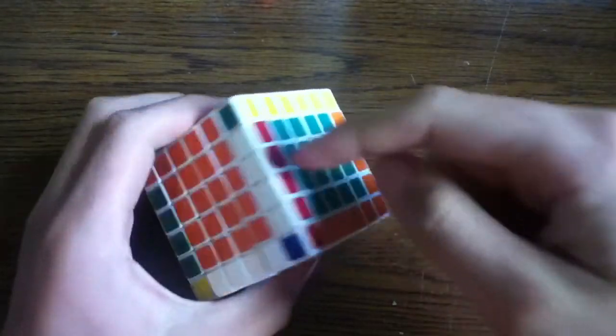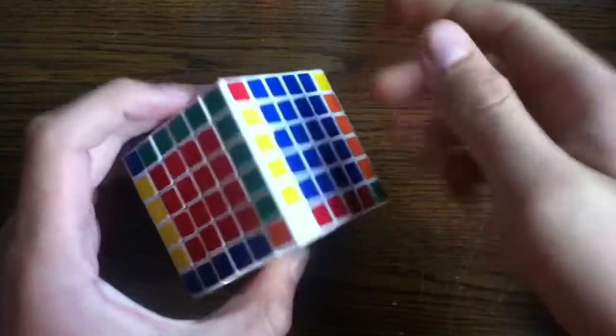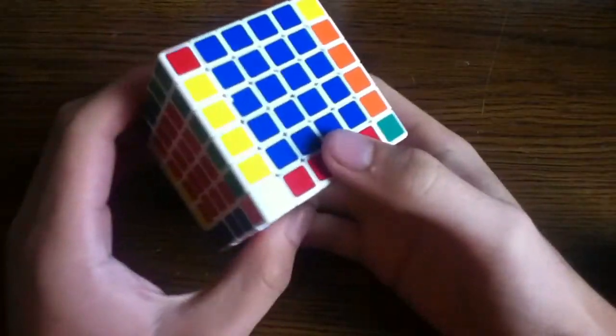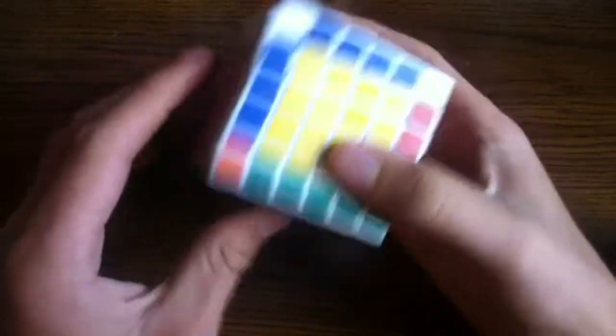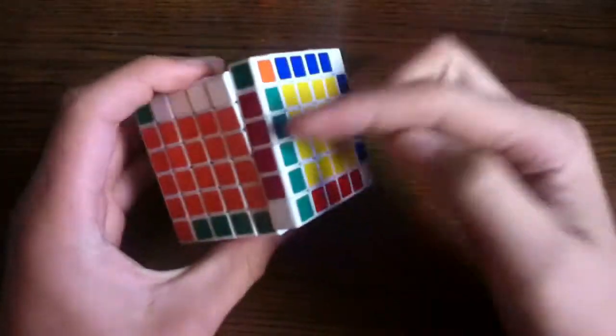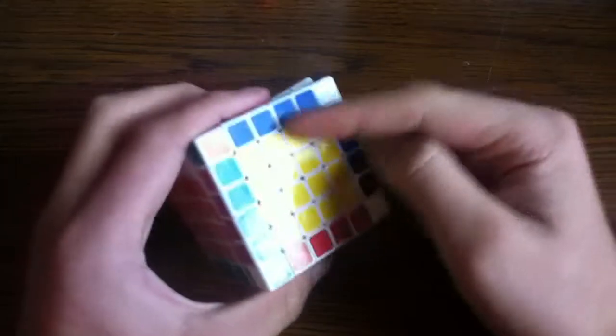Once all the centers and all the edge pieces are all ready to go, you can then commence solving it like a regular 3x3, treating these as one edge piece and this as one middle piece.